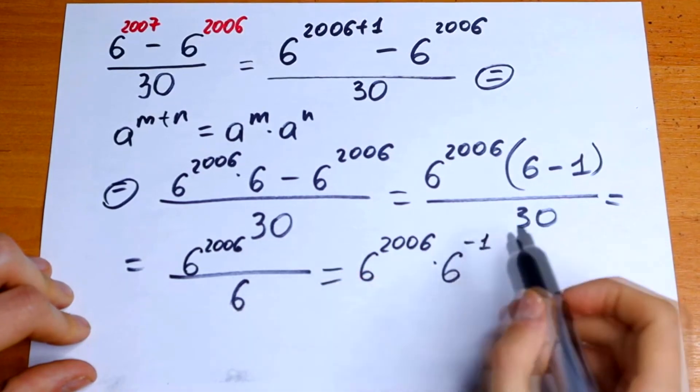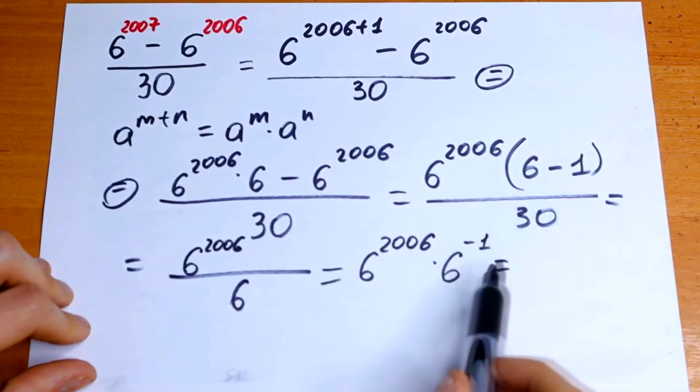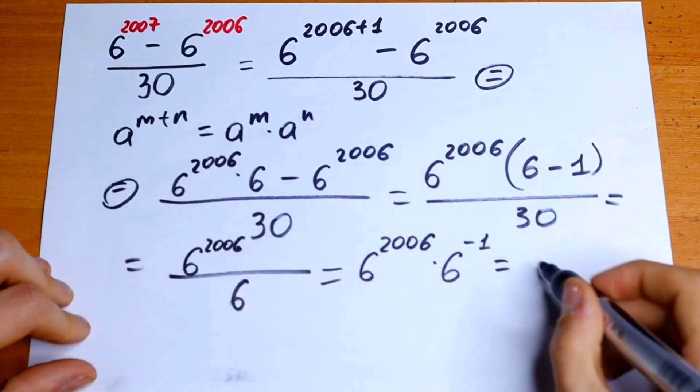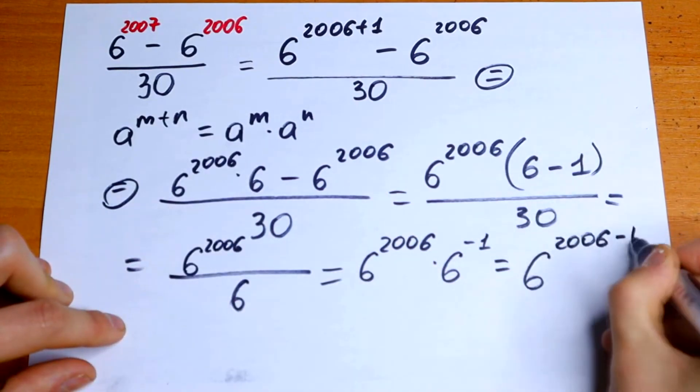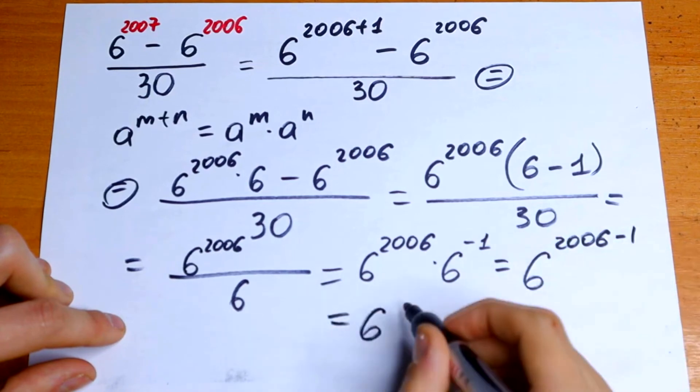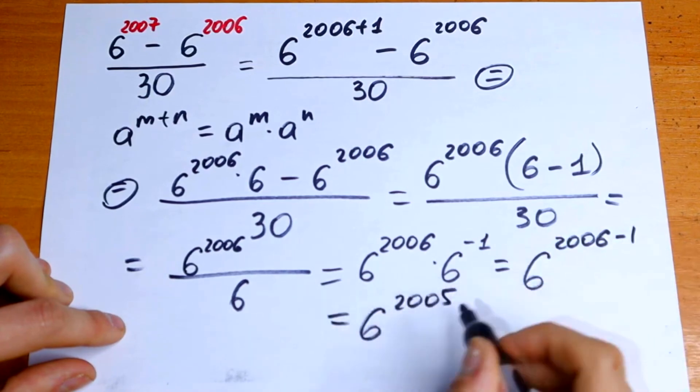And using this rule but the reverse rule we can write it as 6 to the 2006 power minus 1, and the answer is 6 to the 2005 power.